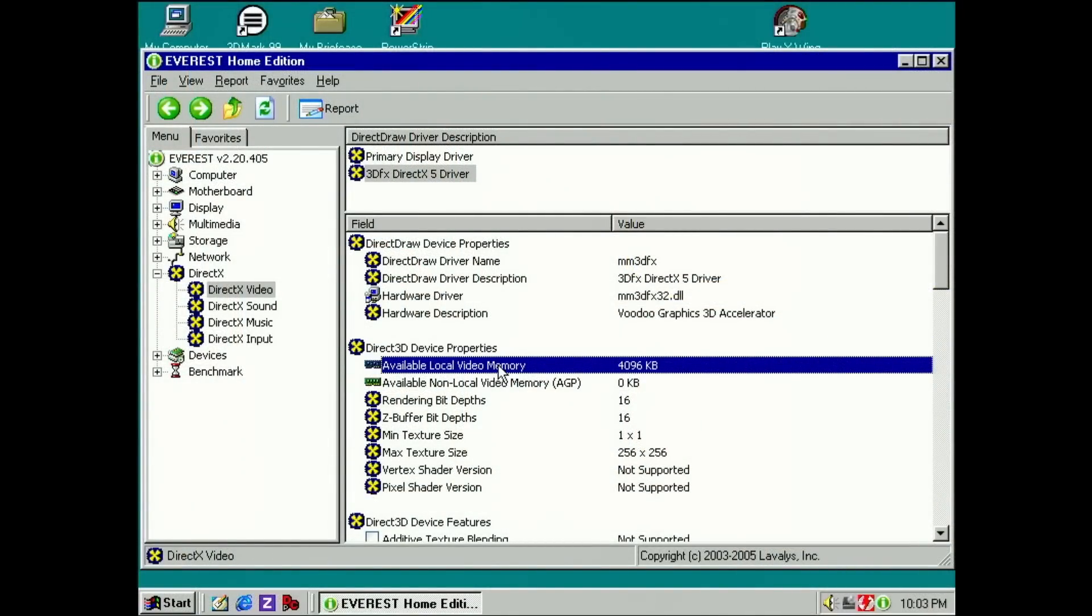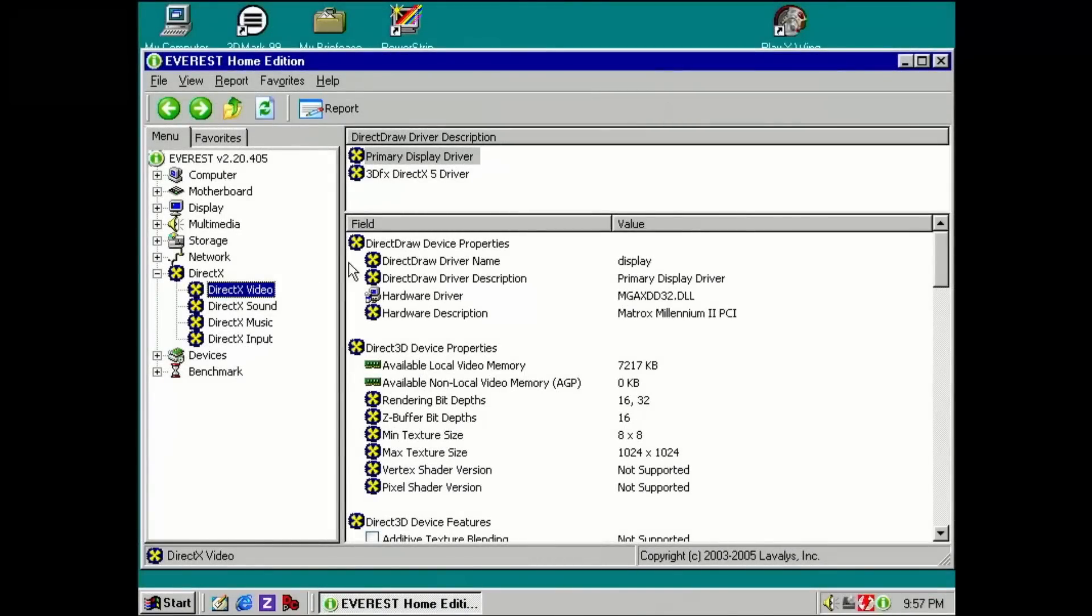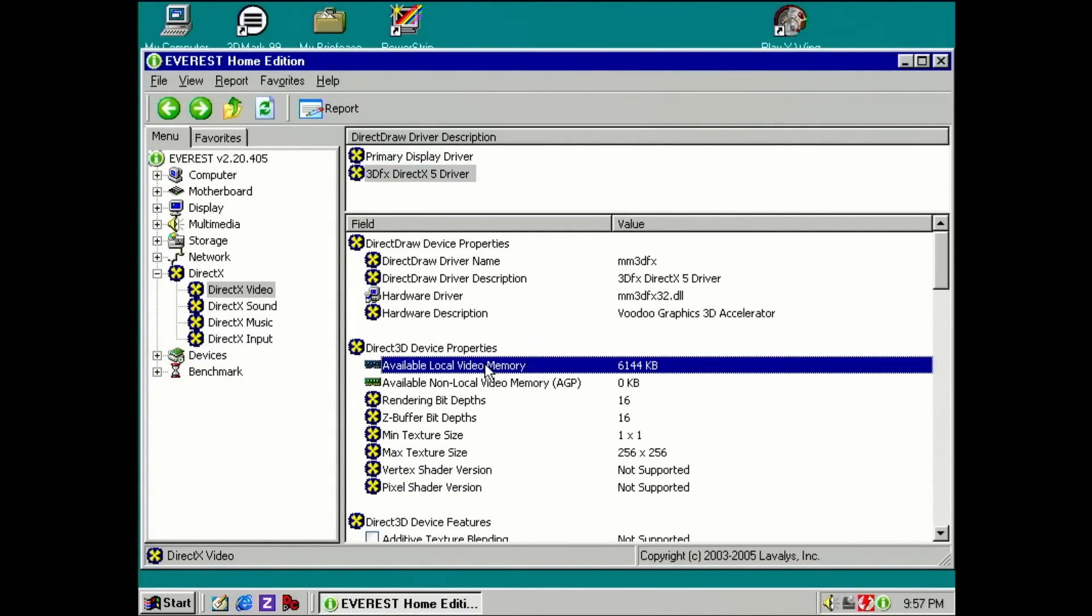Without the additional memory, Everest shows the usual 4MB of video memory. But with the memory expansion card, we get 6MB! I almost can't believe that this project seems to be successful.